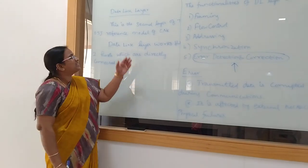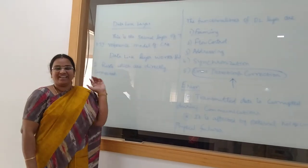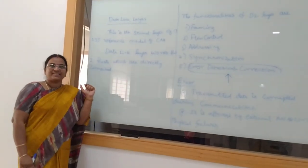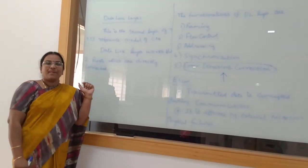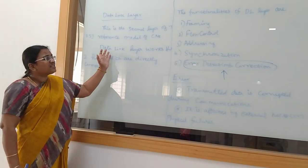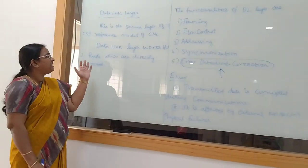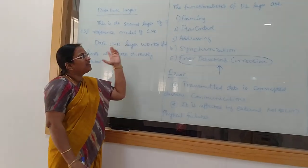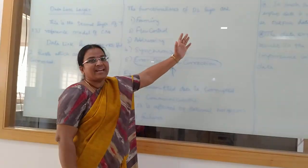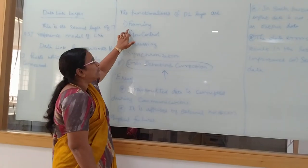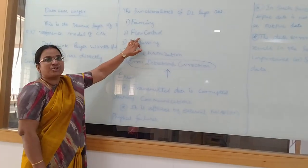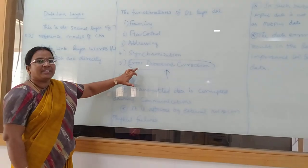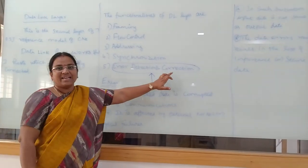Hi viewers. Now we see about the data link layer. This is the second layer of the 7-layer OSI reference model in computer networks. The data link layer works between two hosts which are directly connected. The functionalities of the data link layer are framing, flow control, addressing, synchronization, error control, and error detection.